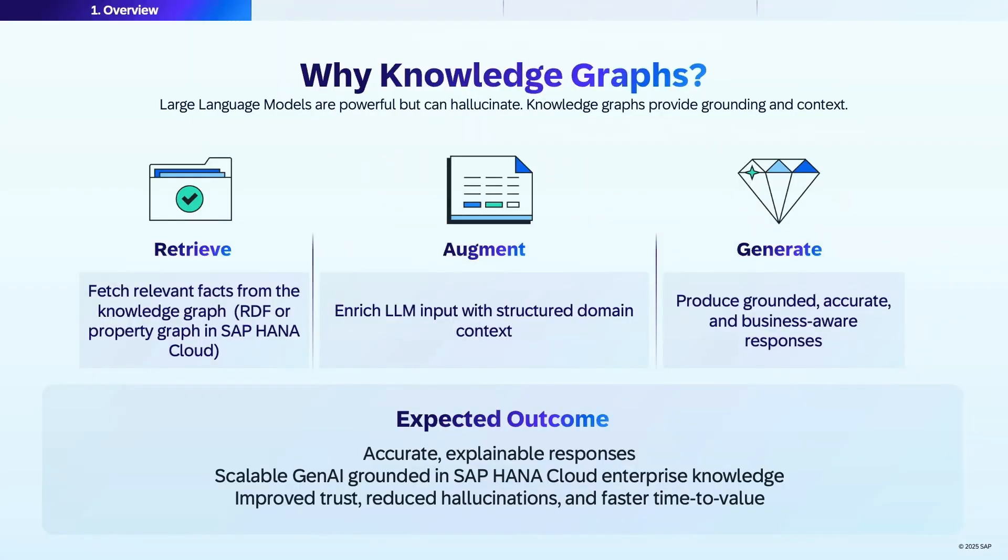Large language models are good at understanding and generating text, but they need reliable sources of information to provide correct answers to real business questions. A knowledge graph is a smart way to organize facts and show how everything is connected. It combines data from tables, documents, and even expert knowledge. Using a knowledge graph can help AI focus on real facts, so it makes fewer mistakes and gives you answers you can trust.